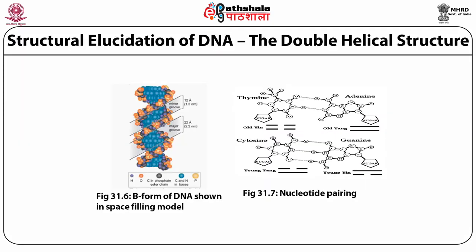Figure 31.6 shows the B form of DNA in a space-filling model and figure 31.7 shows the nucleotide pairing for the four bases thymine, adenine, cytosine, and guanine. In figure 31.6 we can clearly see the major groove and minor groove. The major groove has more space, while the minor groove has less space, with diameters of 22 Å and 12 Å respectively.